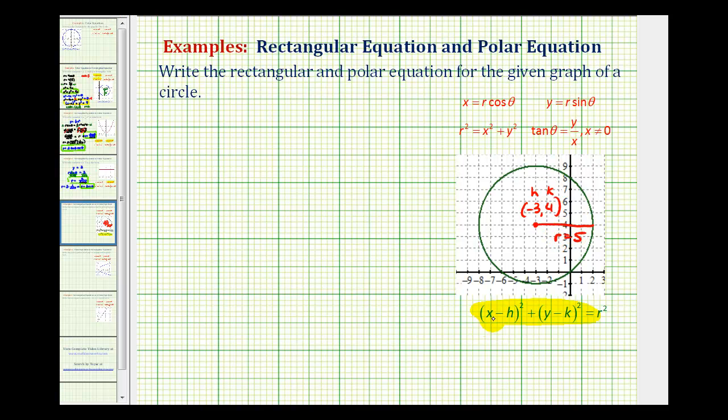So the rectangular equation of the circle would be the quantity x minus negative three, which would be x plus three squared, plus the quantity y minus four squared is equal to five squared or 25. So this is the answer to the first part of this question. This is the rectangular equation of the given circle.